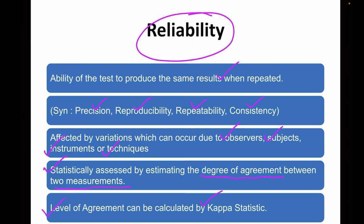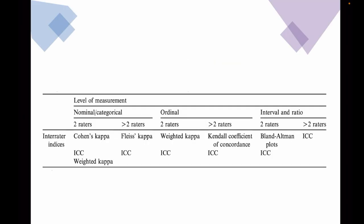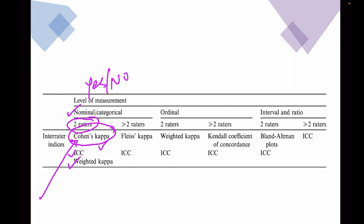When we are repeating a nominal variable, we use the kappa statistic. This table represents inter-rater reliability statistical tests, in which Cohen's kappa stands when we are using a nominal or categorical variable — for example, yes/no or present/absent — and when we are using only two raters, then we use Cohen's kappa. Alternatively, we can go for intra-class correlation coefficient or weighted kappa. The most commonly used inter-rater reliability statistical test is Cohen's kappa when comparing nominal or categorical variables among two raters.